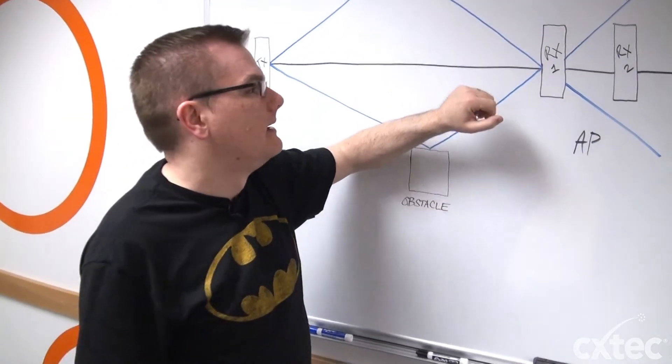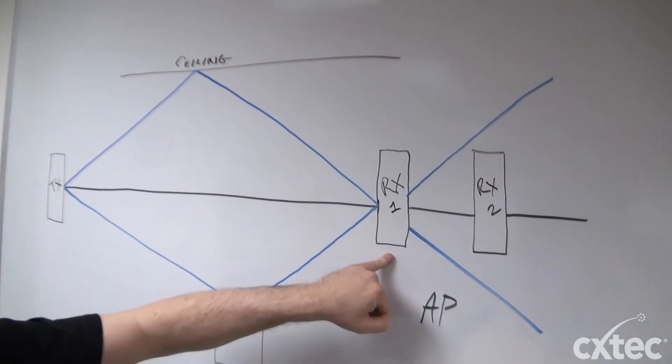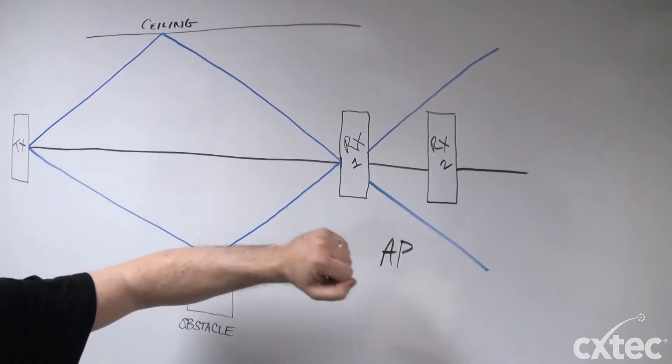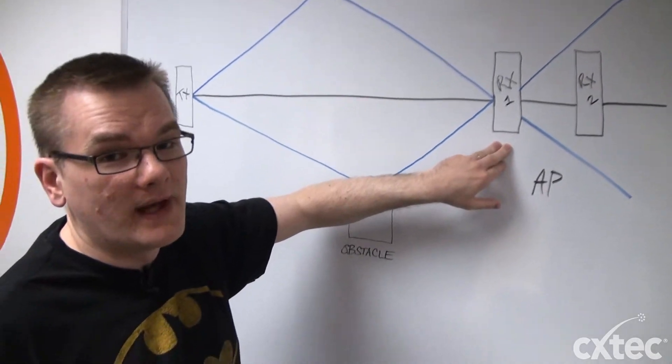That's where diversity comes in. In this case, you can see that signal's reflecting, but it's hitting antenna one, the receiver one, on the AP, and not two. So receiver one would be the antenna that the AP will use for that transmission.